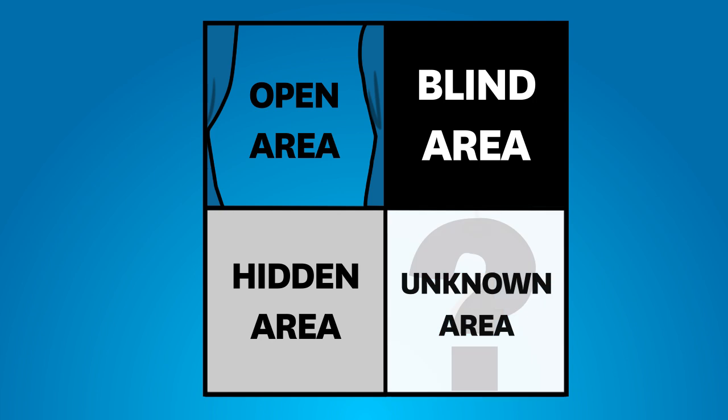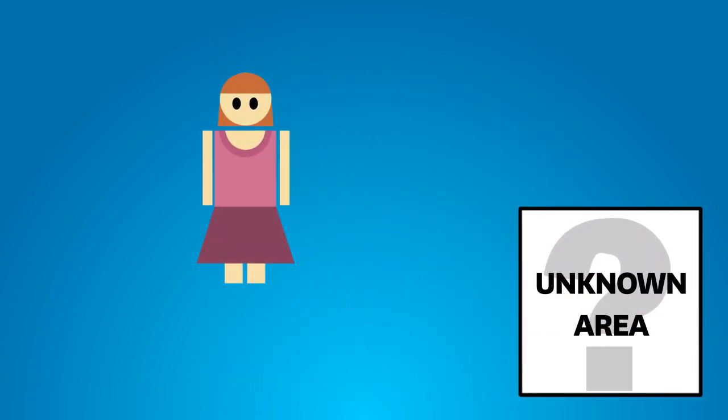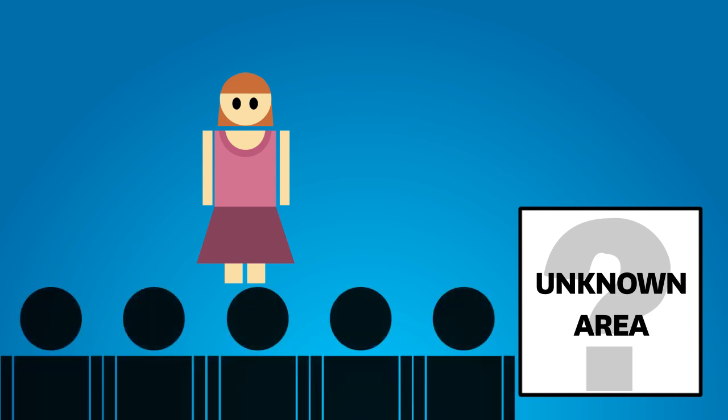Area 4 is the unknown area. This is information unknown by Joe, but also unknown by everyone else. Things like her aptitude for managing people. However, she's never been given the opportunity to demonstrate or uncover this skill.